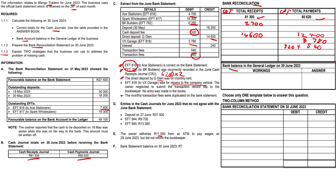The owner withdrew R11,000 from an ATM to pay wages - that's a withdrawal, an outflow, so it's a payment. We plug in the R11,000 here. It's important to note that this figure also goes into our bank reconciliation, as does the transaction fee.